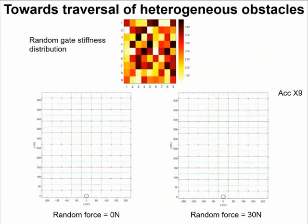Here's another example of a field with random stiffness of each gate. So the color means the stiffness of the beam.